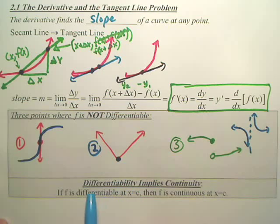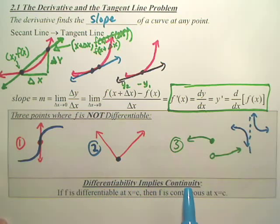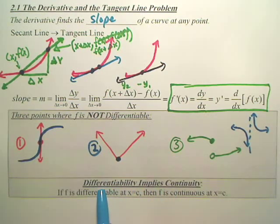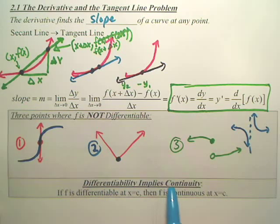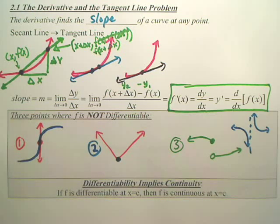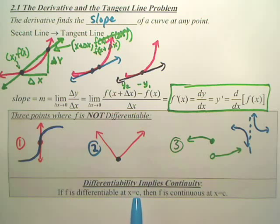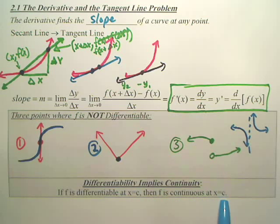But these two, differentiability implies continuity. Meaning, if it has a slope at all points, it has to be continuous. Is the inverse true? Actually, let me start with this. If f is differentiable at x equals c, meaning if it has a slope at a given point, then the function is continuous at that point. So if we know something is differentiable or has a slope, we can say without a doubt it also is continuous at that point.